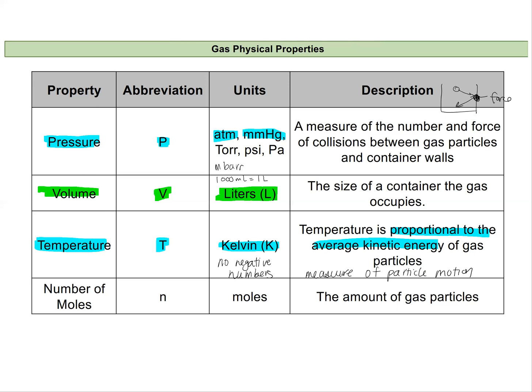And then our last variable we'll look at is the number of moles that we have of a gas particle. And we'll use the abbreviation lowercase n, and its units will be moles. And this is how we're going to track the amount of the gas particles that we have, similar to how we tracked these in chemical reactions.